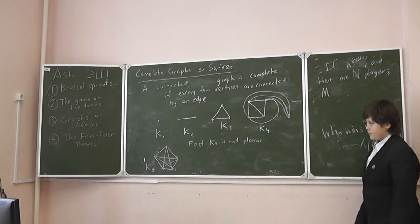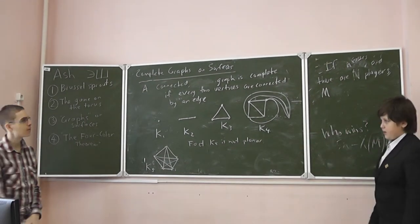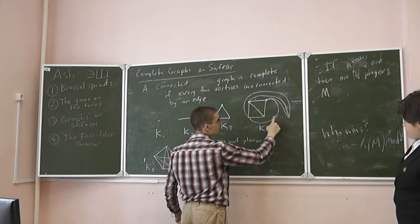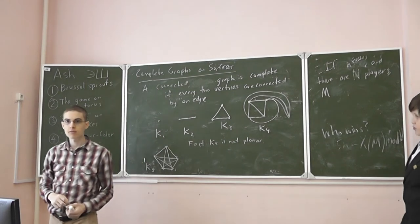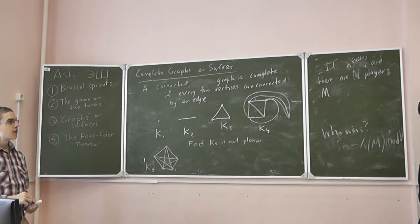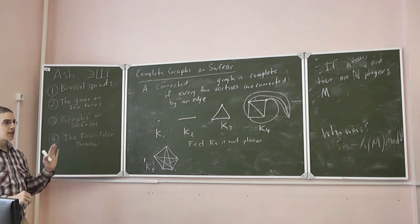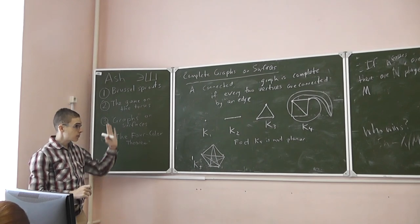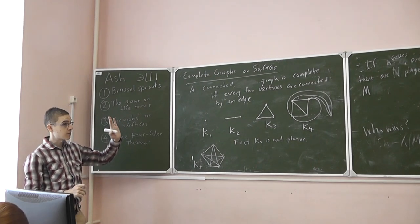And what was the theorem we caught with before? You're saying you can't connect these two. The theorem was Jordan. Jordan. Jordan curve theorem. Good. Okay, so we can't draw this graph on a plane because we have the Jordan curve theorem.